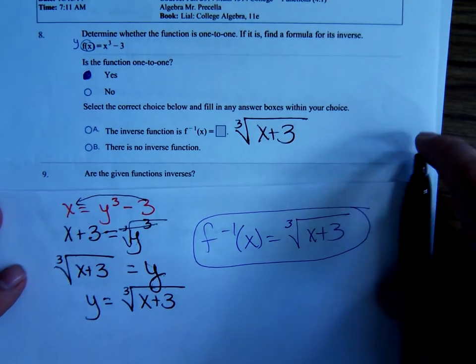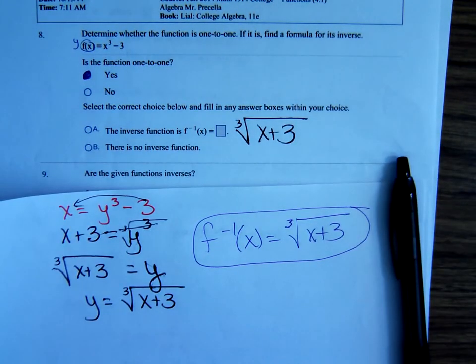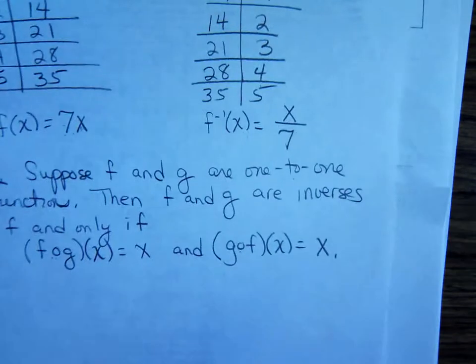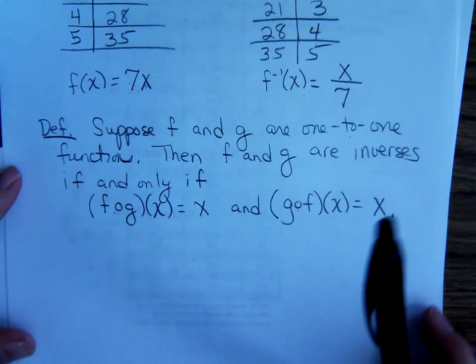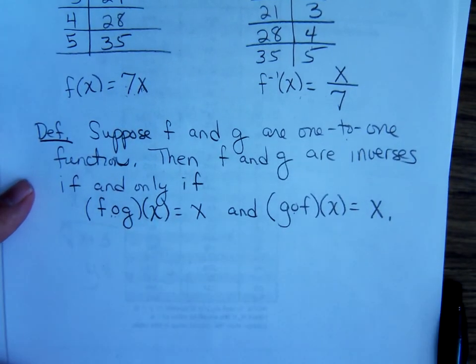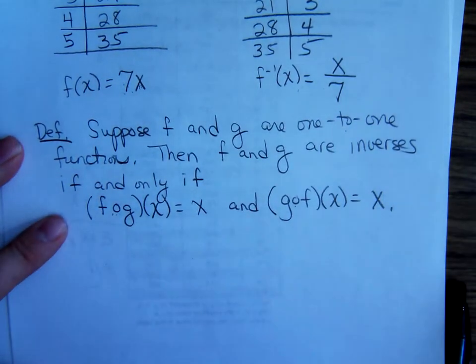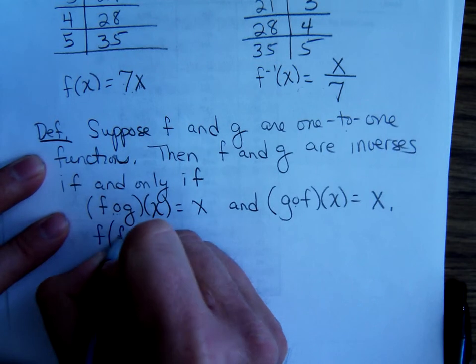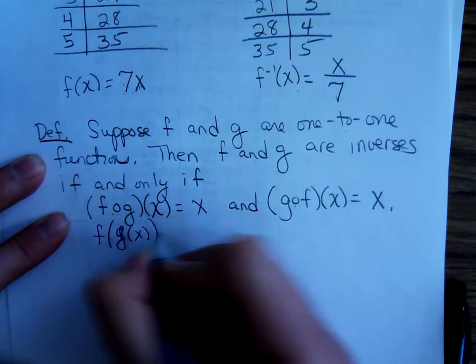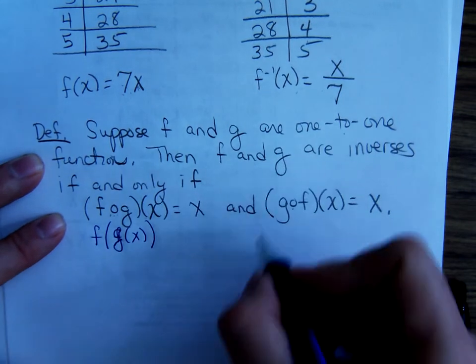A lot of important concepts here. A function needs to be one-to-one so that its inverse will be a function. And, one-to-one means no repeated y values. How do we formally define an inverse? Well, we say two one-to-one functions f and g are inverses of each other if and only if f of g of x equals x and g of f of x equals x. Notice, on my math lab there, it was writing it like this. Rather than writing the fog, I was just using the big embedded parentheses.